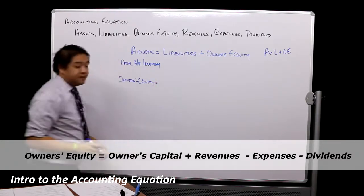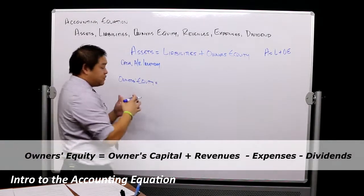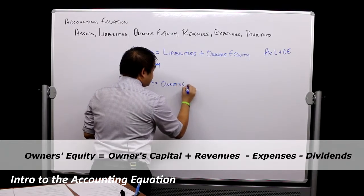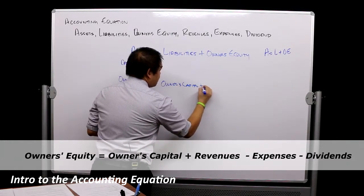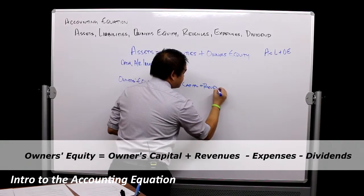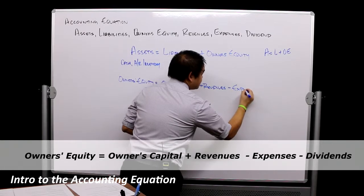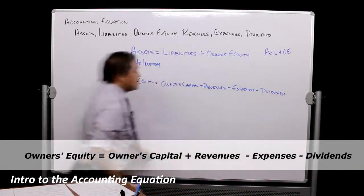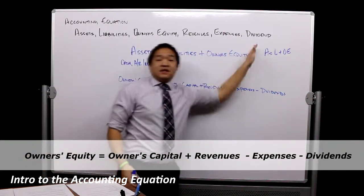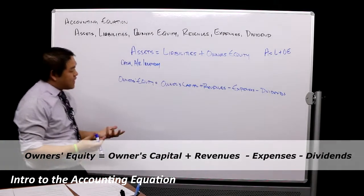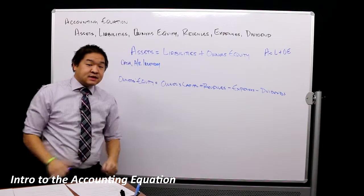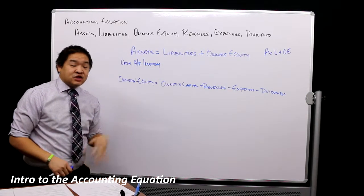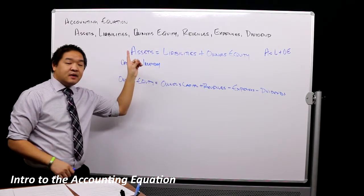Owner's equity really could be thought of as owner's capital plus revenues minus expenses minus dividends. Notice that we're using revenues, expenses, and dividends now. Owner's equity theoretically includes owner's capital—how much I put into the business to invest in that business. Then my equity goes up if we bring in revenues.